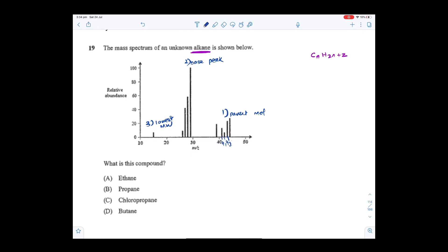Right? 42, 43, 44. So the highest molecular weight is 44. So we have to ask ourselves what kind of alkane would have a molecular weight or atomic mass of 44? I would say probably propane.